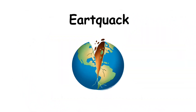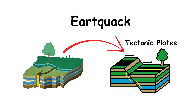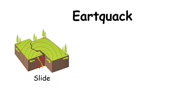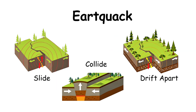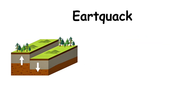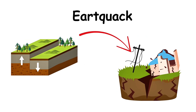Earthquakes. An earthquake is a vibration of the Earth's surface caused by the movement of tectonic plates. These plates can slide past each other, collide, or drift apart. When a huge amount of energy is suddenly released, the ground begins to shake.